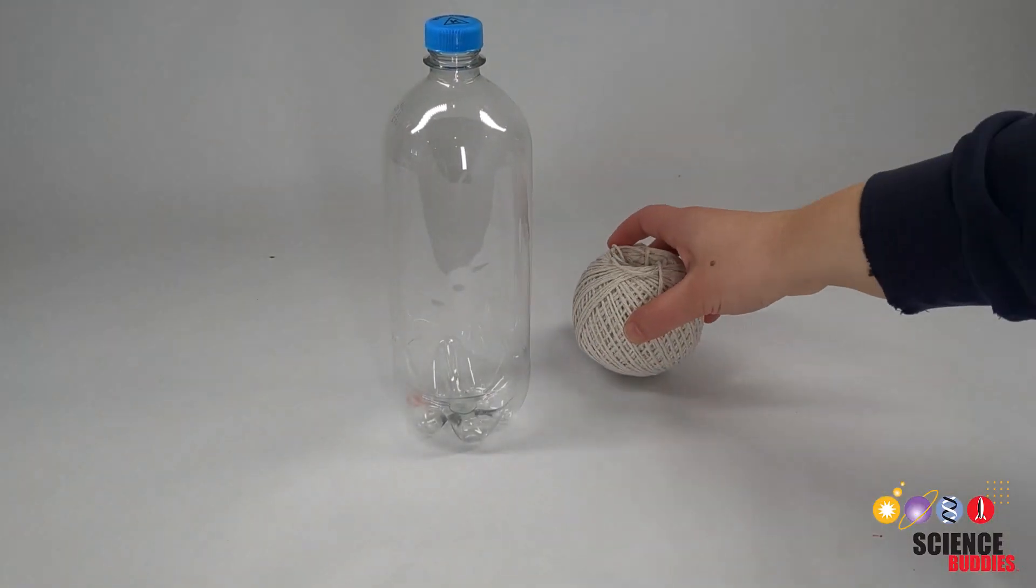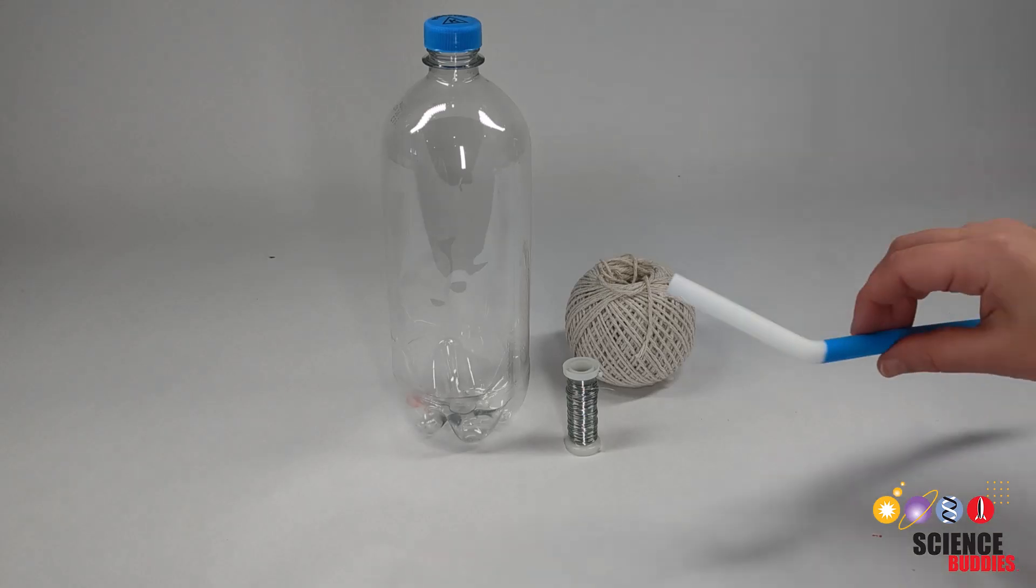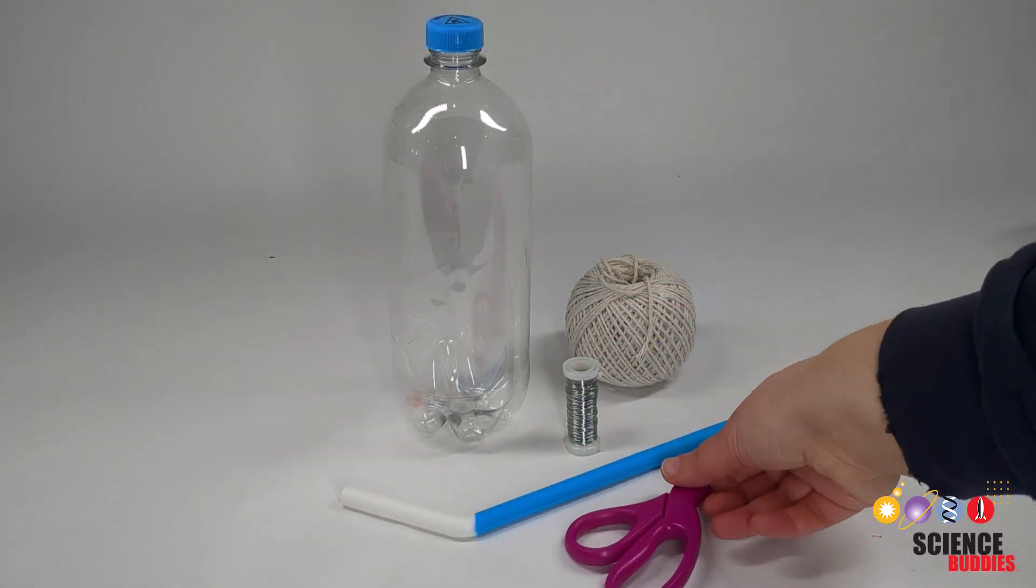To make your own drip irrigation system, you'll need a few common household items. For a full list of project materials, check out the link in this video's description.